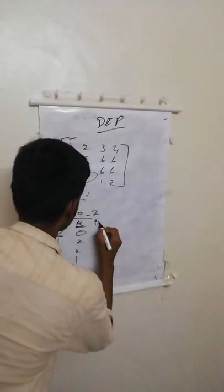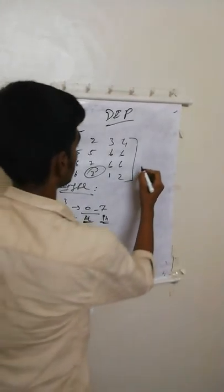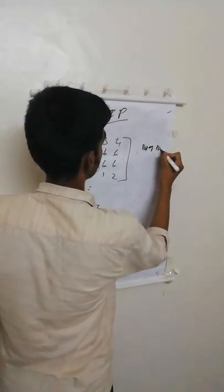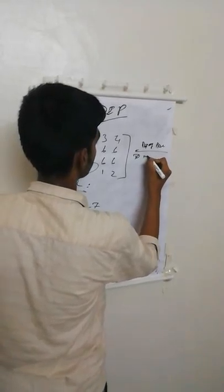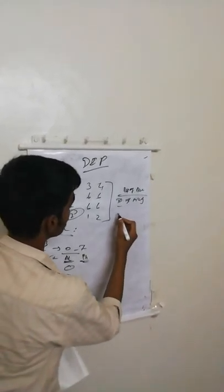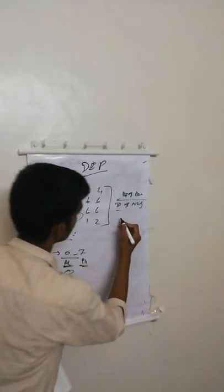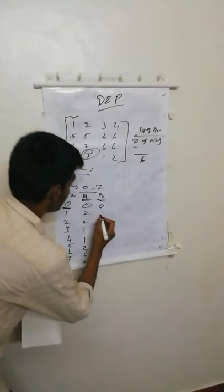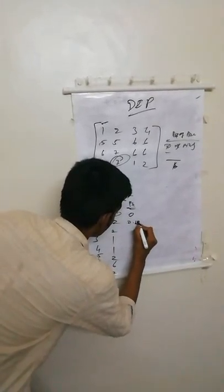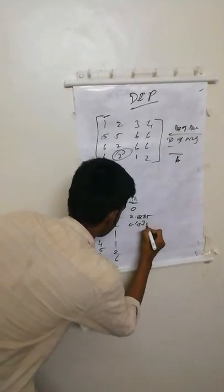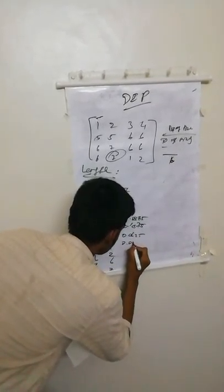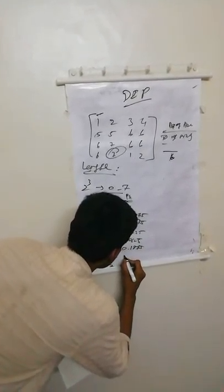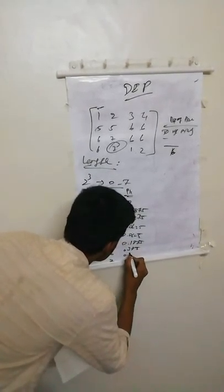Then we have to calculate the probability. Probability is calculated by dividing the number of times each pixel value occurs by the total number of pixels — which is 16. So p(k): 0/16 = 0; 2/16 = 0.125; 2/16 = 0.125; 1/16 = 0.0625; 2/16 = 0.125; 2/16 = 0.125; 6/16 = 0.375; 2/16 = 0.125.